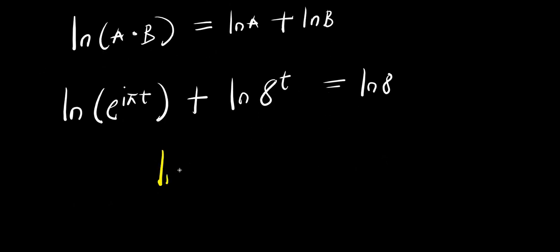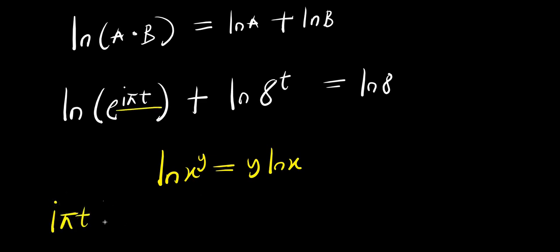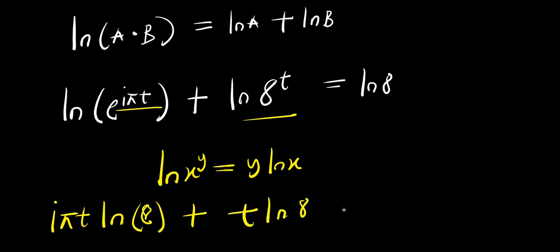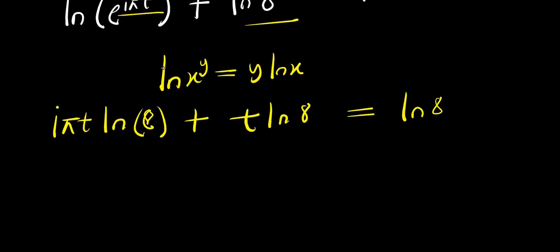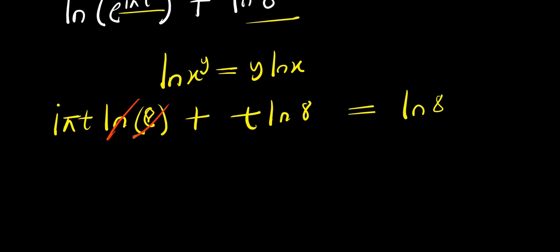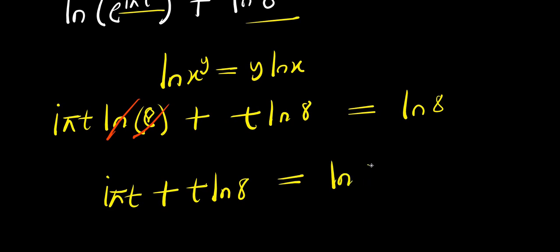Now applying the rule that natural log x power y equals y times natural log x. So I have i times pi times t times natural log e, plus t times natural log 8 equals natural log 8.